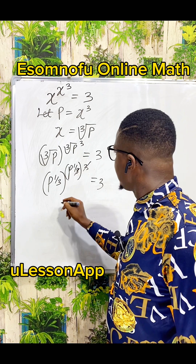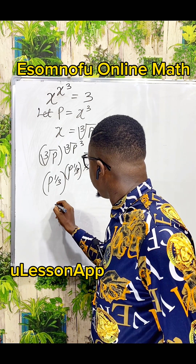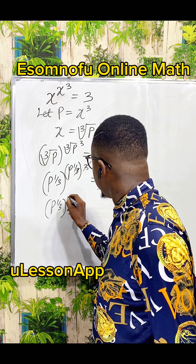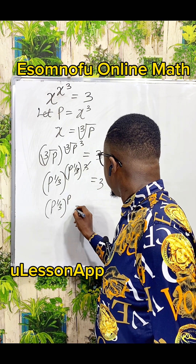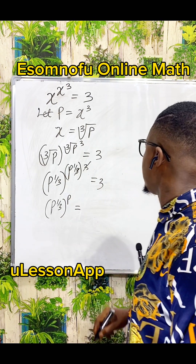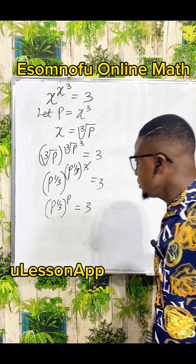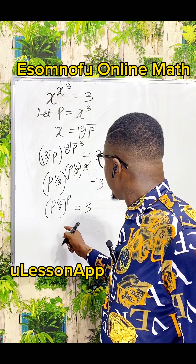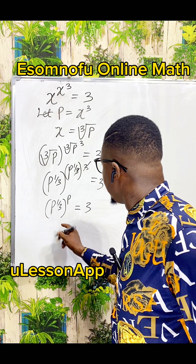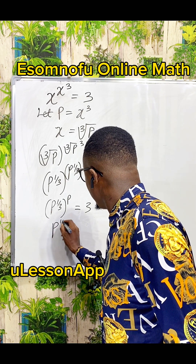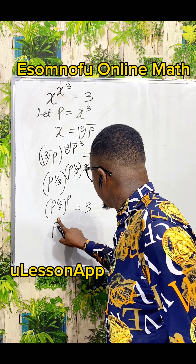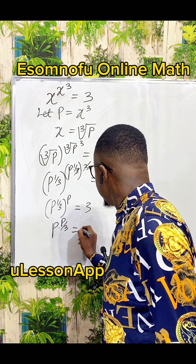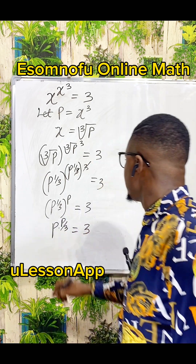The 3s cancel out, leaving us with the fact that p to the power of 1 over 3, all to the power of just p, is equal to 3. From here, we can have again that when you multiply p times 1 over 3, that gives p over 3, which is equal to 3.